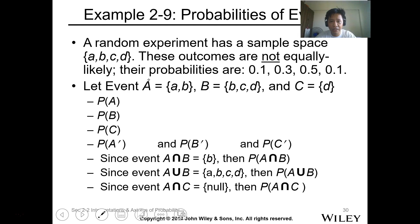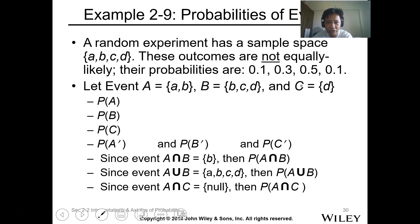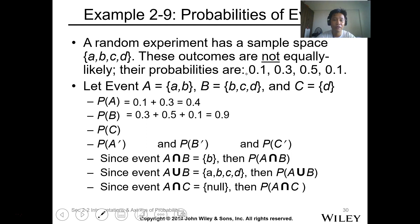Let event A contain elements a and b, event B contain elements b, c, and d, and event C contain element b. The probability of A is P(a) + P(b) = 0.1 + 0.3 = 0.4. The probability of event B is P(b) + P(c) + P(d) = 0.3 + 0.5 + 0.1 = 0.9. The probability of event C is 0.1.